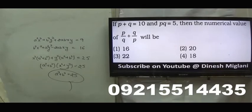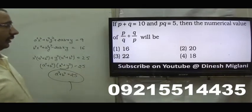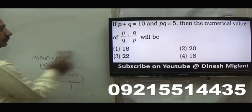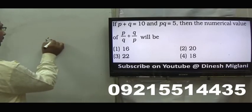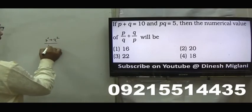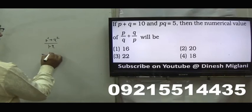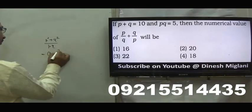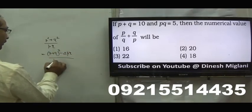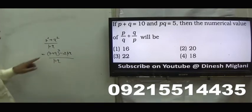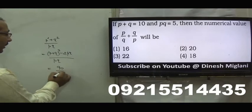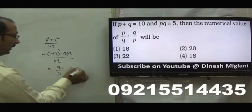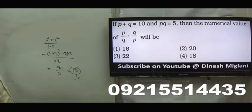p plus q equal to 10, pq equal to 5. Taking LCM: p by q plus q by p equals p square plus q square divided by pq. That is p plus q whole square minus 2pq divided by pq. So 100 minus 10, which is 90 divided by 5, equals 18. Hence, fourth is my answer, 18.